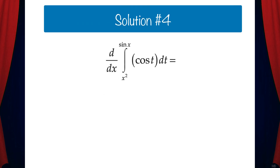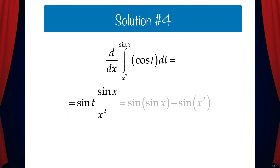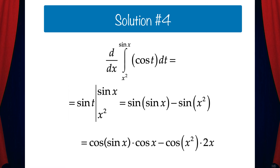Finally, let's look at the problem where both limits of integration are functions. Let's solve this the long way. The antiderivative of cosine t is sine t, and we'll evaluate that from x squared to sine x. This gives us sine of sine x minus sine of x squared. Taking the derivative, we get cosine of sine x times cosine x by the chain rule, minus cosine of x squared times 2x by the chain rule.